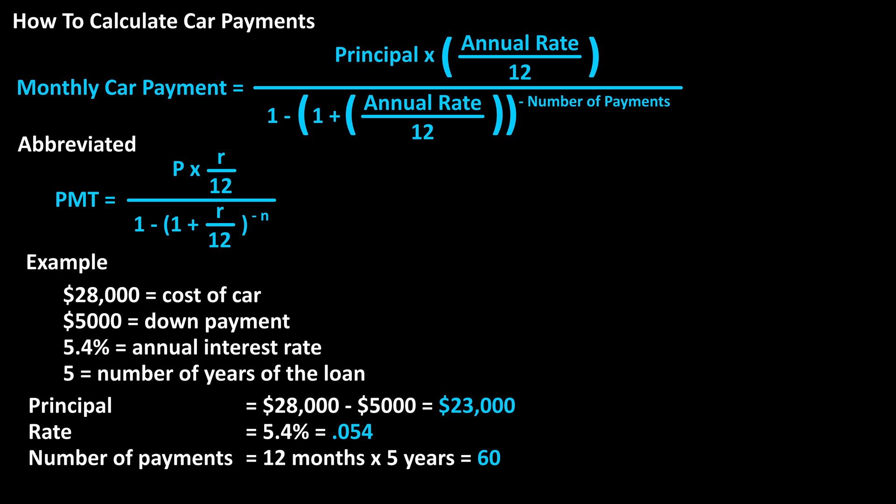Now we can plug into the formula. We have monthly car payment equals $23,000 times .054 divided by 12 divided by 1 minus the quantity, 1 plus .054 divided by 12, raised to the negative 60.